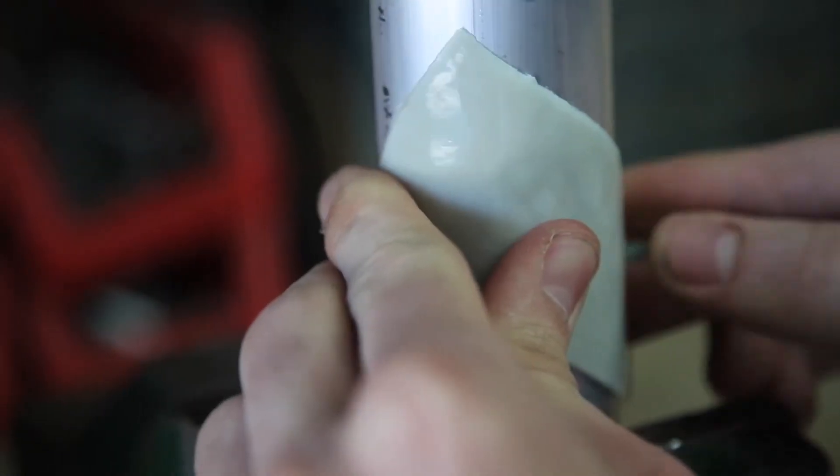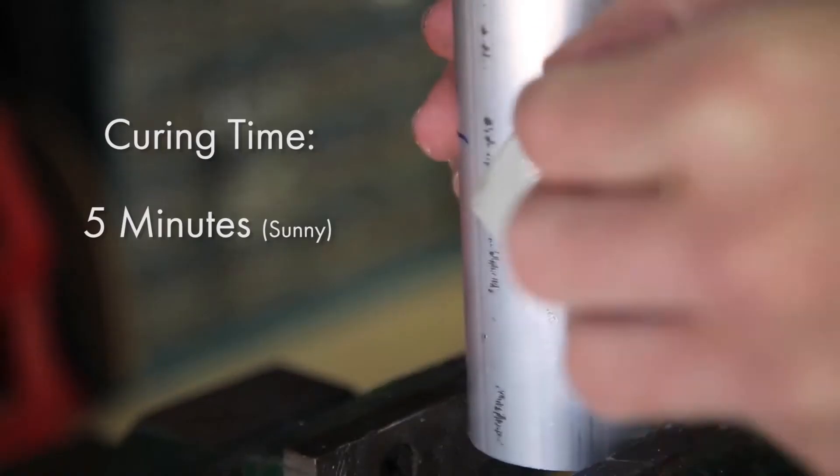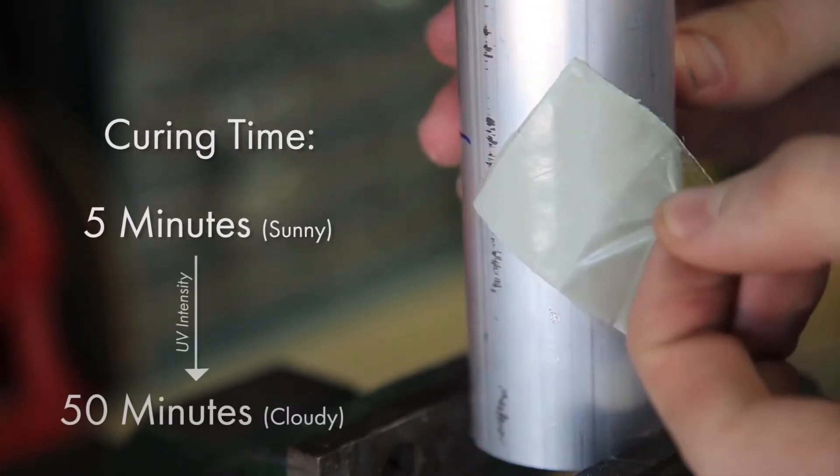Remove the transparent film from the patch top and expose to UV or sunlight. Curing time depends on UV intensity, between 5 and 50 minutes.